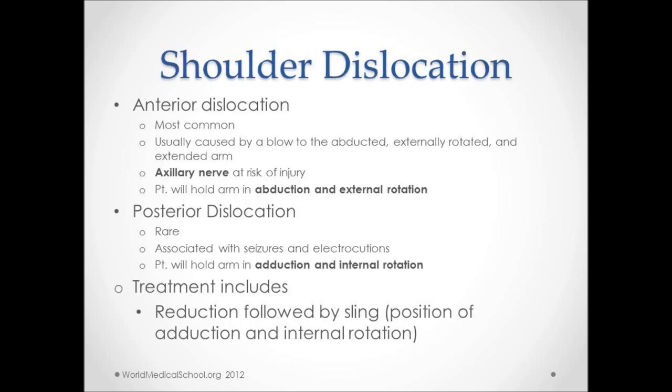The first section we'll talk about is shoulder dislocations. Anterior dislocations tend to be the most common and are usually caused by a blow to an abducted, externally rotated, and extended arm. It's important to remember that with anterior shoulder dislocations, the axillary nerve is at risk for injury. You may have some weakness in those muscles innervated by the axillary nerve, including the deltoid and the teres minor muscles.